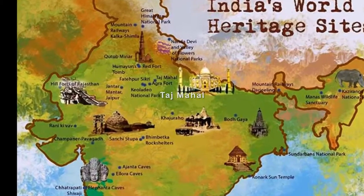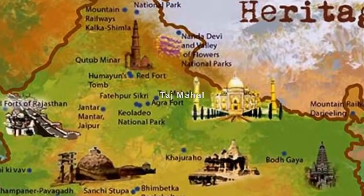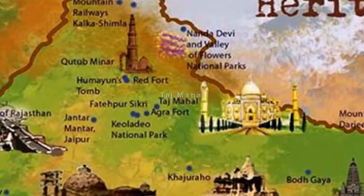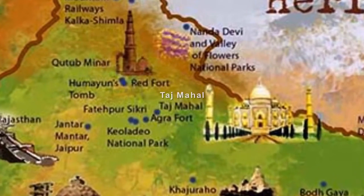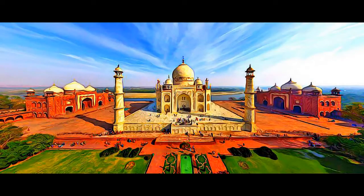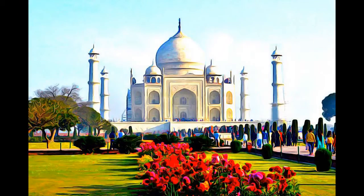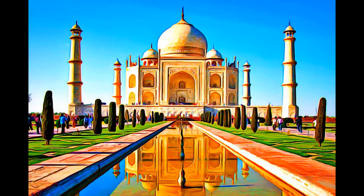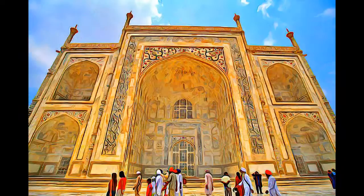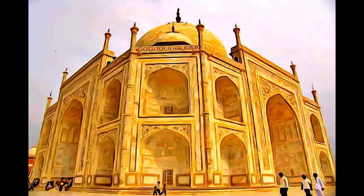The Taj Mahal is located on the right bank of the Yamuna river, in a vast Mughal garden that encompasses nearly 17 hectares, in the Agra district in Uttar Pradesh. It was built by Mughal Emperor Shah Jahan in memory of his wife Mumtaz Mahal.